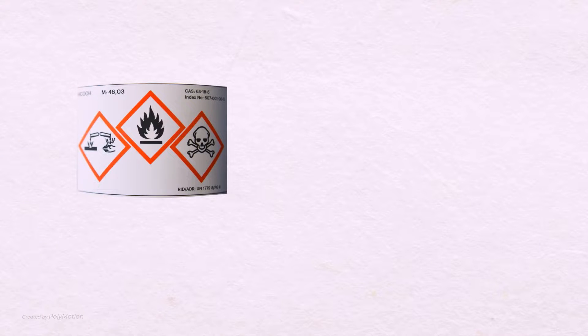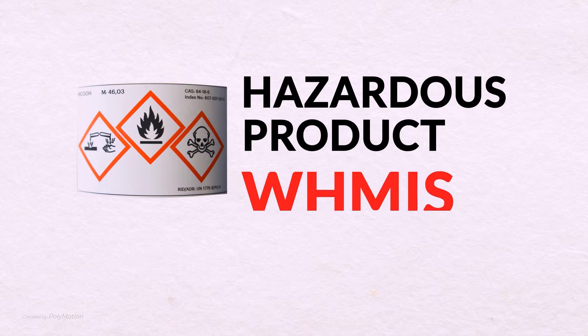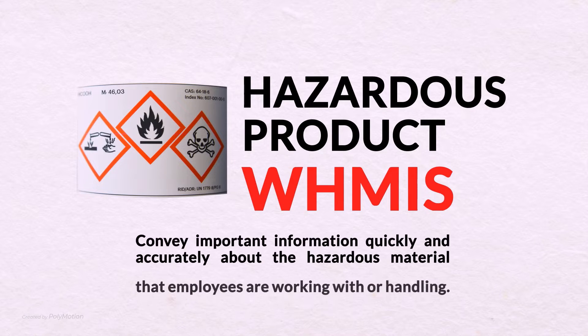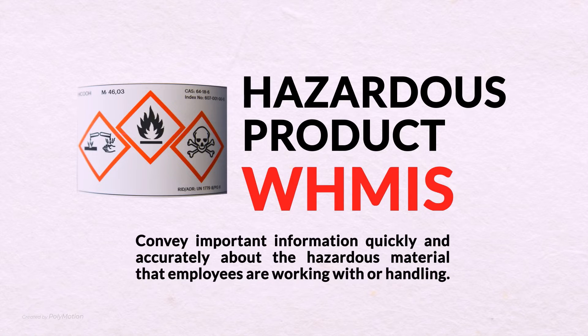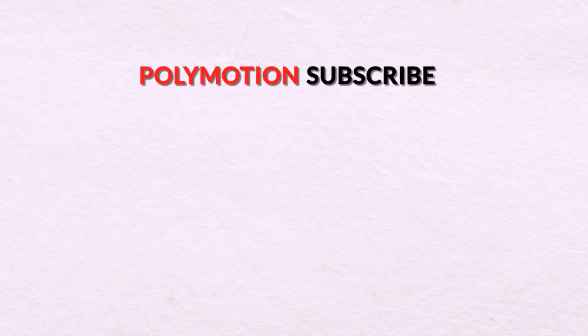You will find these pictograms on product supplier labels or on safety data sheets of hazardous products, to convey important information quickly and accurately about the hazardous material that employees are working with or handling. Thank you for watching.